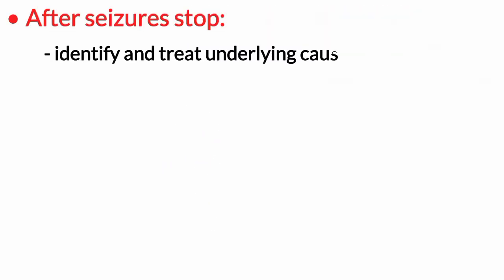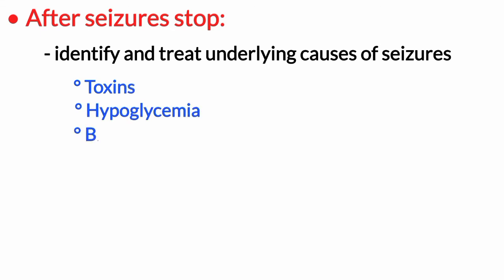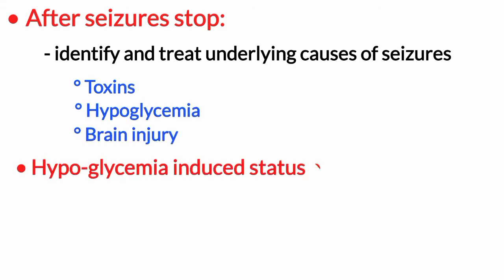After seizures stop, identify and treat the underlying causes, such as toxins, hypoglycemia, or brain injury. Hypoglycemia-induced status epilepticus is treated with intravenous dextrose.